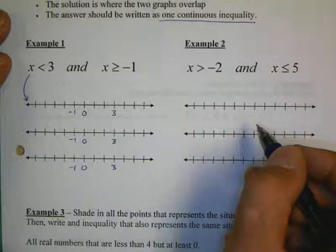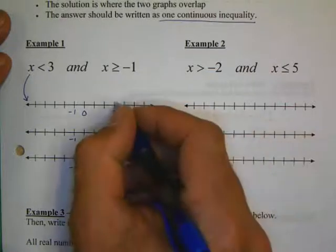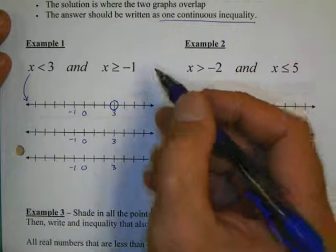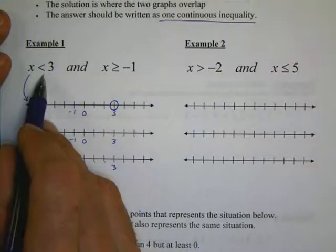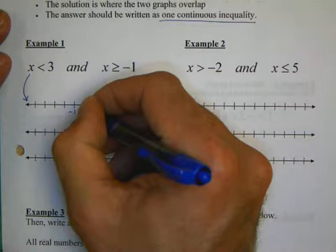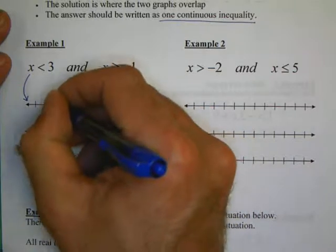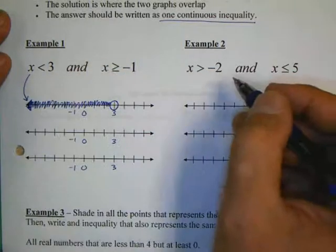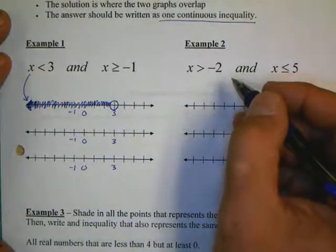Our first number line, x is less than three, is going to be graphed on the first number line. So, we put a circle, an open circle right there. And since it points to the left, we're going to shade to the left. So, go ahead and shade in everything to the left.